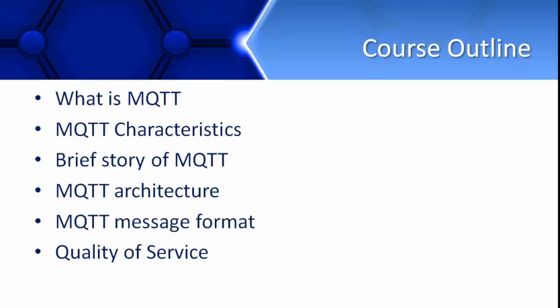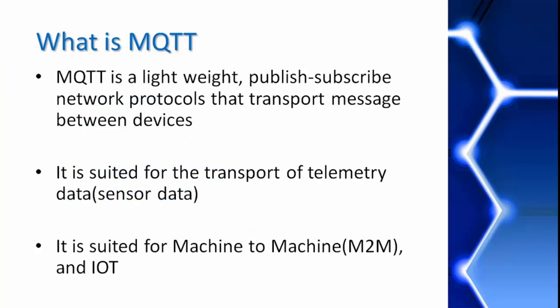Now let's start with what is MQTT. MQTT is machine to machine, internet of things connectivity protocol. It was designed as an extremely lightweight publish-subscribe messaging transport. It is useful for connections with remote locations where network bandwidth is at a premium. These characteristics make it ideal for use in many situations including constrained environments such as for communication in machine to machine and internet of things contexts.